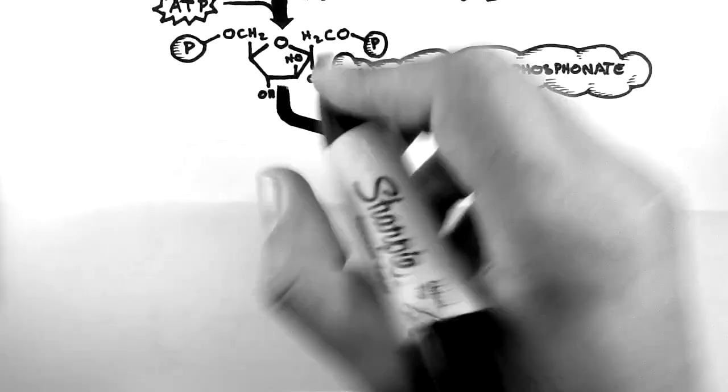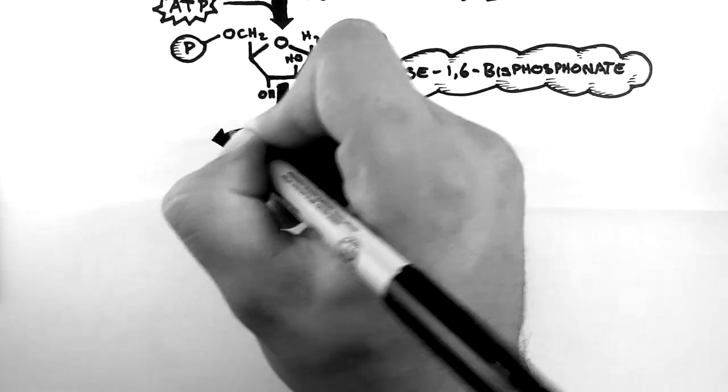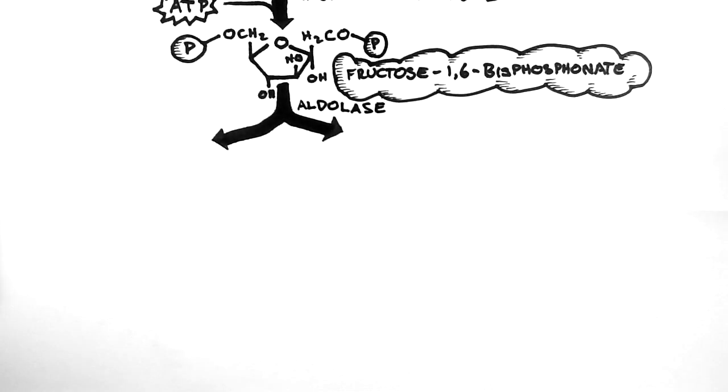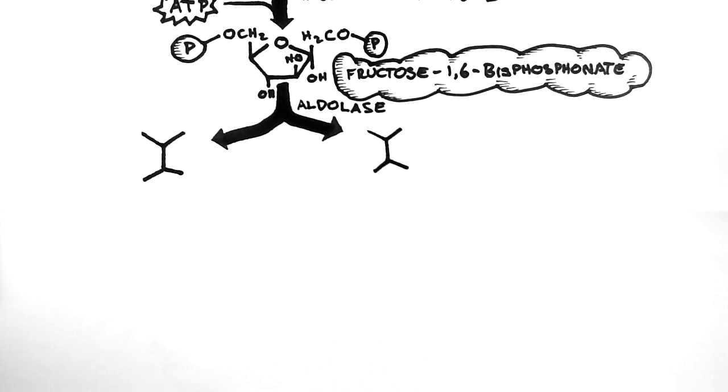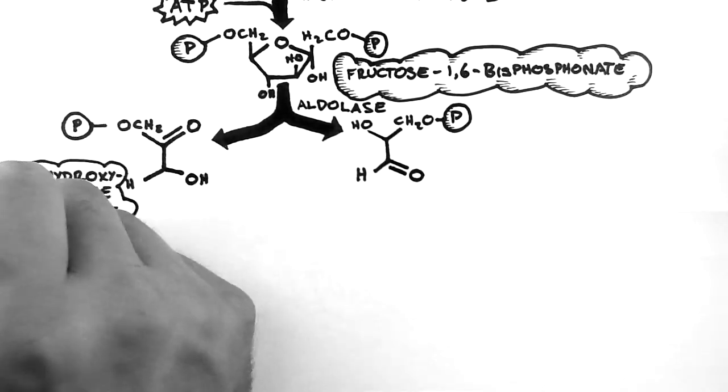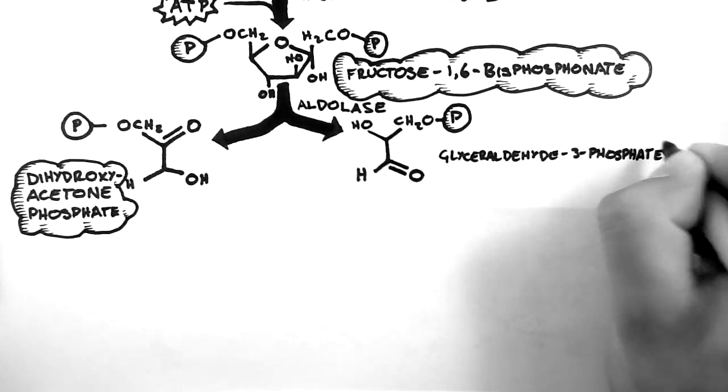Anyway, moving on, the molecule is then split in half by fructose bisphosphate aldolase. An aldolase is an enzyme that creates or breaks carbon to carbon bonds, which makes it the enzyme of choice to split the fructose 1,6-bisphosphate molecule into these two molecules, dihydroxyacetone phosphate and glyceraldehyde 3-phosphate.